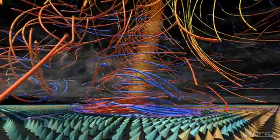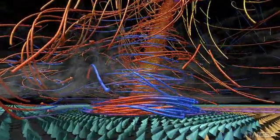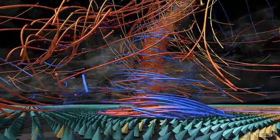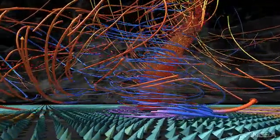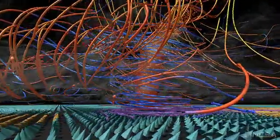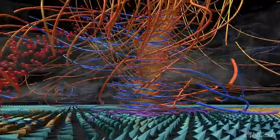Warm moist air feeds the storm from the east and rises sharply upward from the surface. Tilting cones colored by temperature represent the wind speed and direction at the surface and show the interaction of warm and cold air.